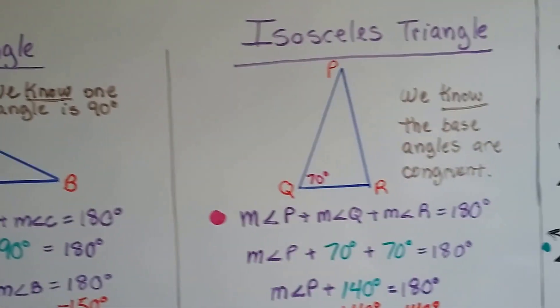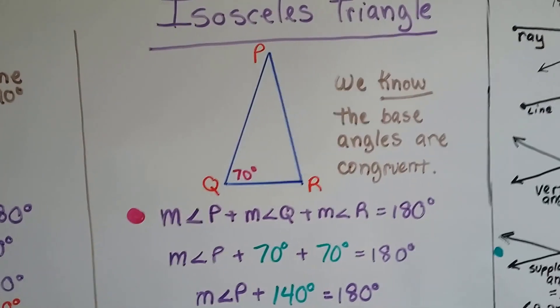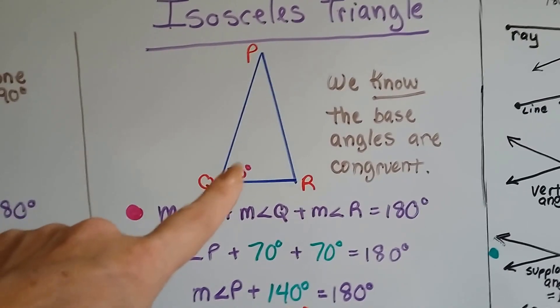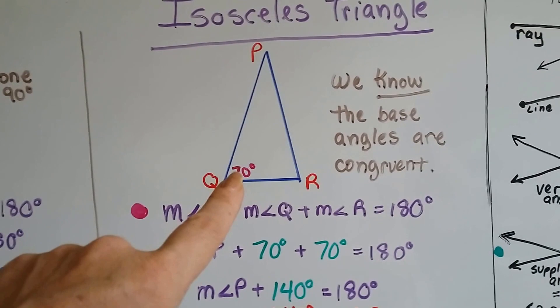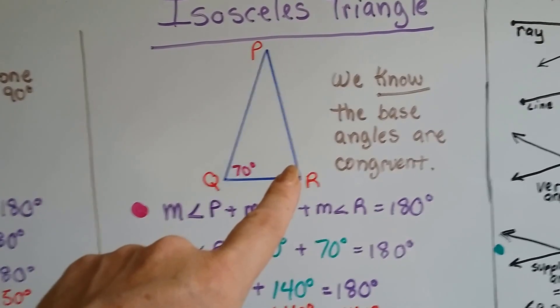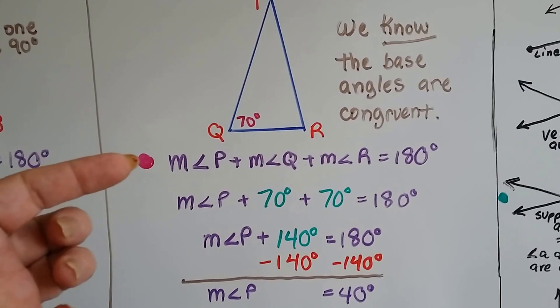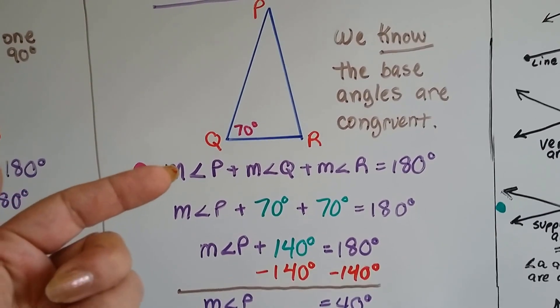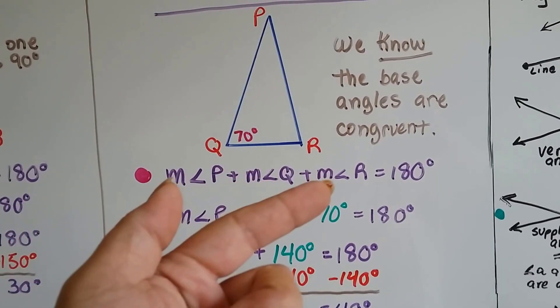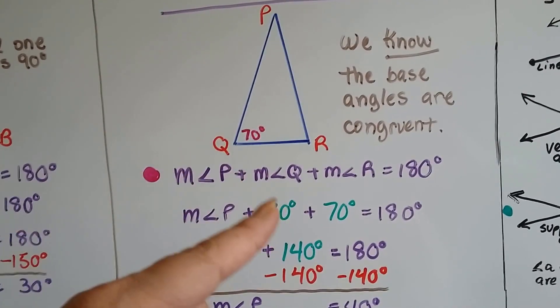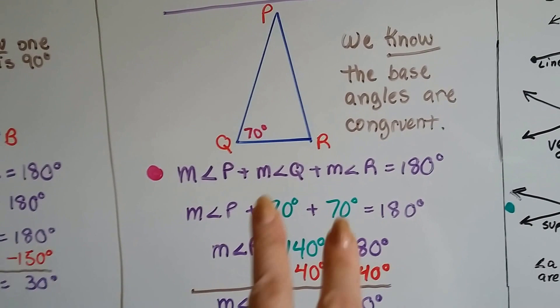Let's look at an isosceles one. We have triangle PQR, and we know that this is 70 degrees. If this is 70 degrees and this is an isosceles triangle, we know that this is 70 degrees because the base angles are congruent. When we write the Triangle Sum Theorem as an equation, measure of angle P plus measure of angle Q plus measure of angle R equals 180. We could substitute the 70 for Q and the 70 for R, get 140.